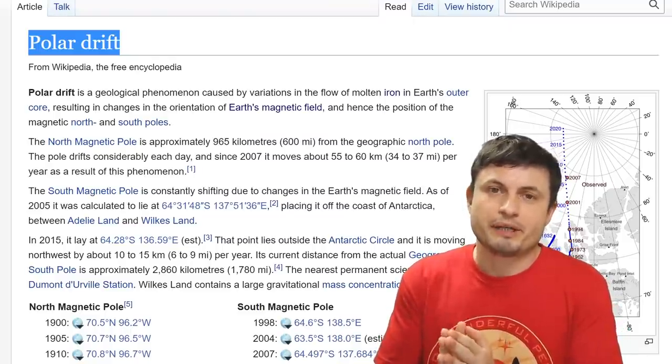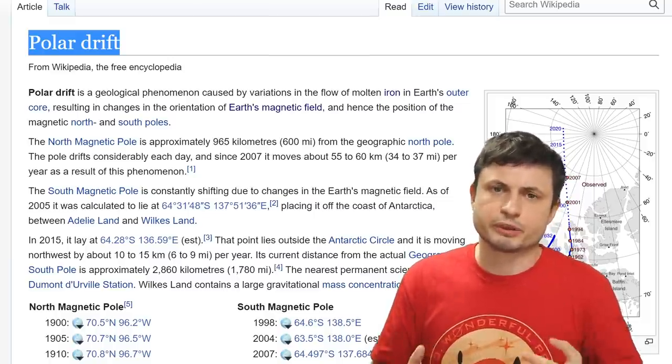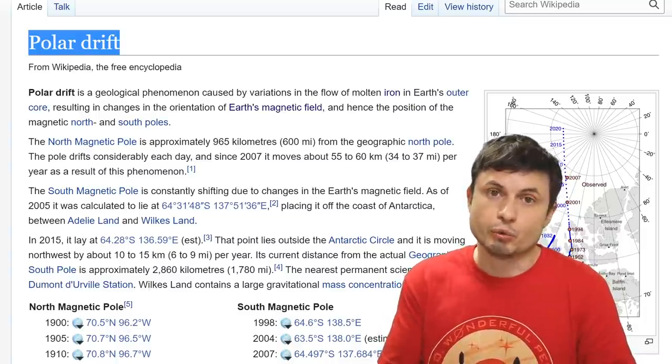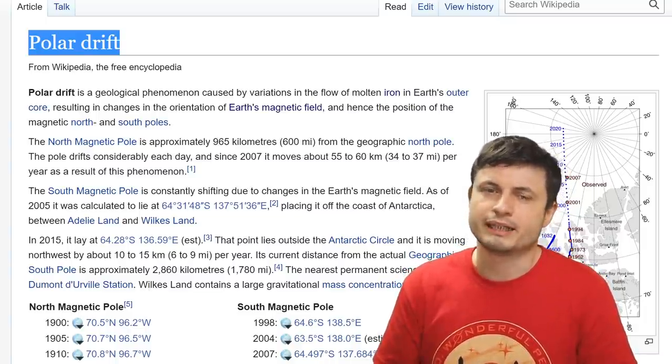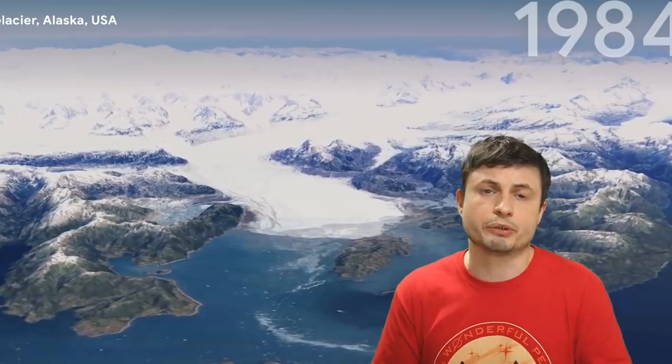But anyway, so what exactly is happening with this and what's happening with the paper. Now first of all, let's do this really quickly. Polar drift here is still a mystery. It's happening, we know it's happening. But it probably does not necessarily have anything to do with the changes that we're observing in the ice distribution and water distribution on the planet.